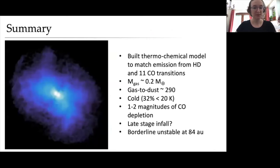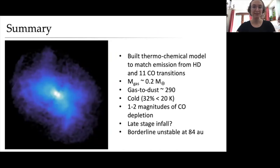To summarize, as part of the MAPS large program, I built a thermochemical model to match emission from HD and 11 transitions of CO. We find a total gas mass of 0.2 solar masses, a gas-to-dust ratio of 290. The disk is cold with one to two orders of magnitude CO depletion. There is possible late-stage infall onto the disk, and it appears borderline unstable at 80 AU. Thank you.